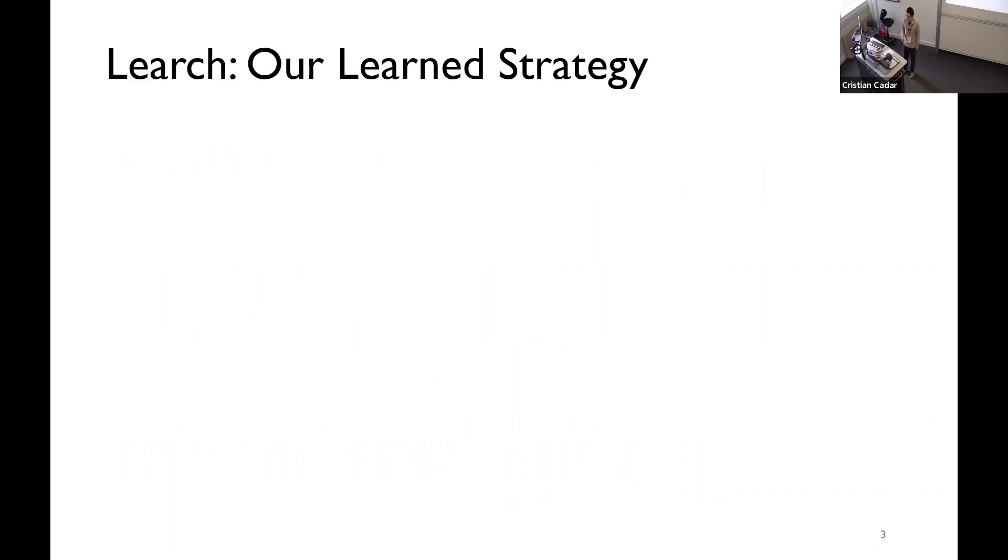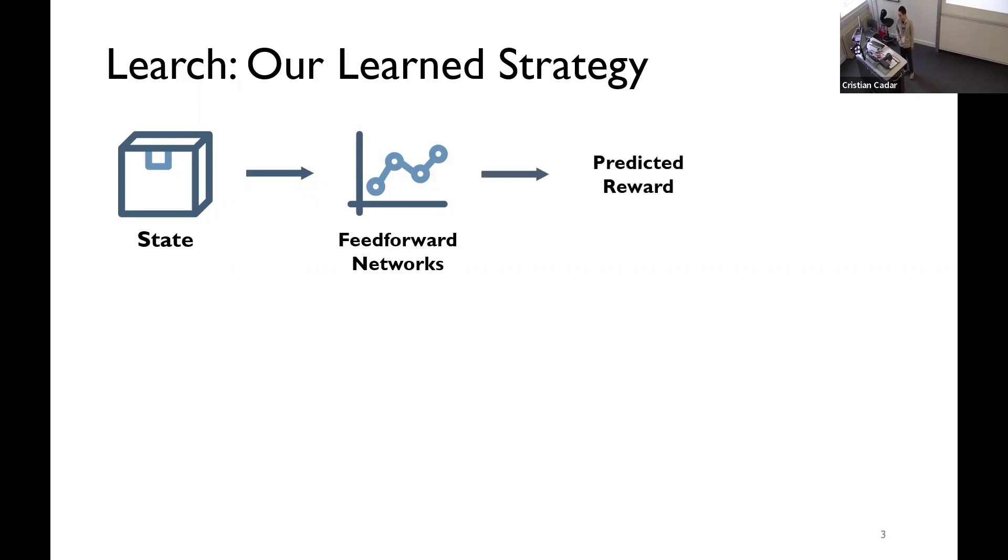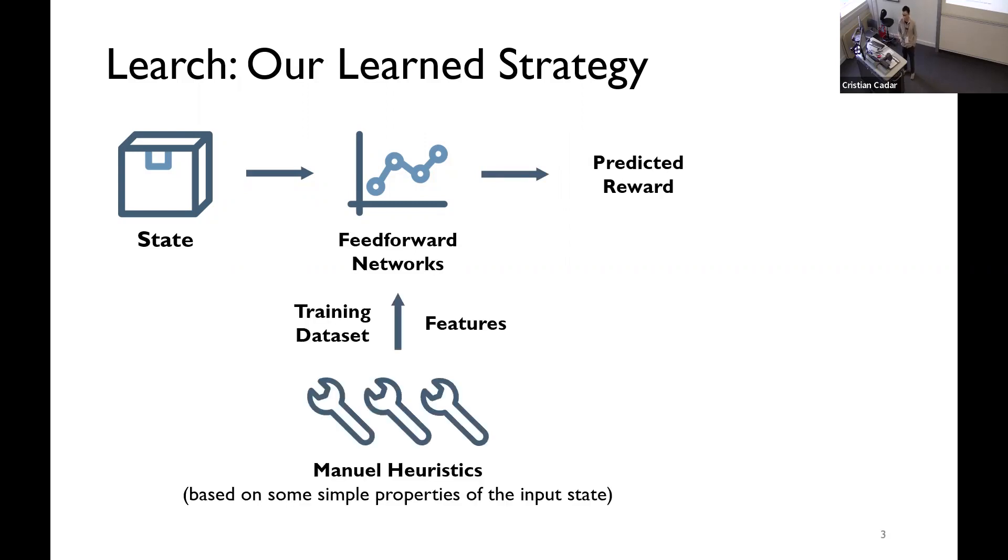Our learning strategy is called NERJ. How it works: given a state, it extracts some features. The features include how many functions have been called to reach this state, and how many new coverage has this state already achieved, this kind of stuff. The feed-forward network just predicts the reward for this state. We train this feed-forward network with a training dataset of programs. And, we also use already existing manual heuristics in CLI to run on these training programs and get some datasets for training this network. The features also include the properties of the heuristics in the existing strategies.